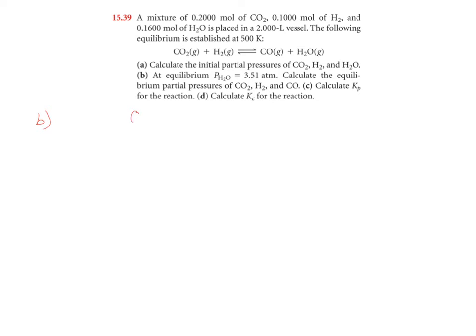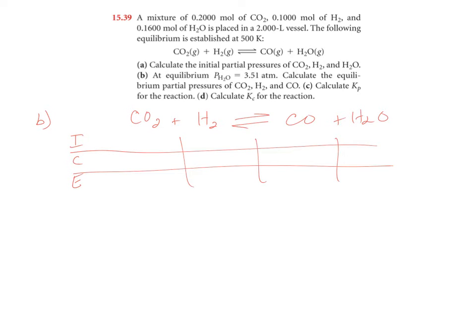So if my equation, which is all gaseous substances, we need an ICE chart. Now we know our initial pressures, we just found them. For carbon dioxide, it was 4.10. For hydrogen gas, it was 2.05. Water vapor, it was 3.28. We weren't given any information on carbon monoxide, so it's zero.